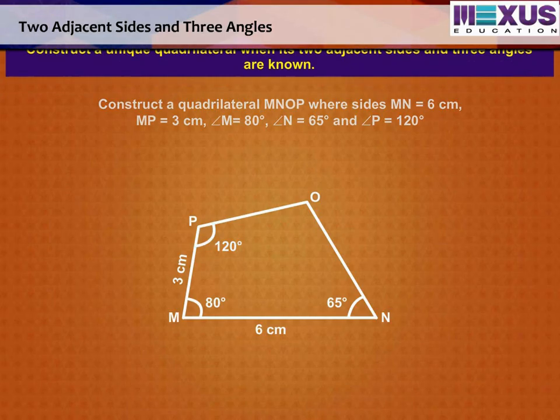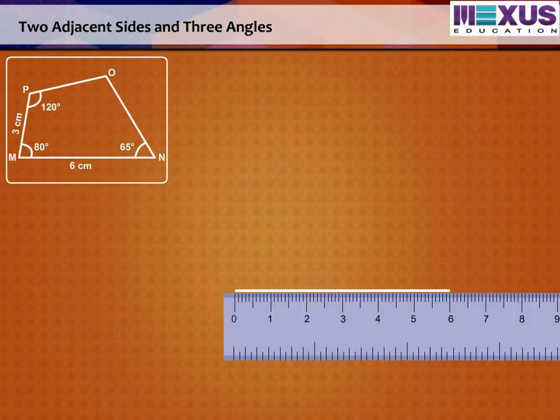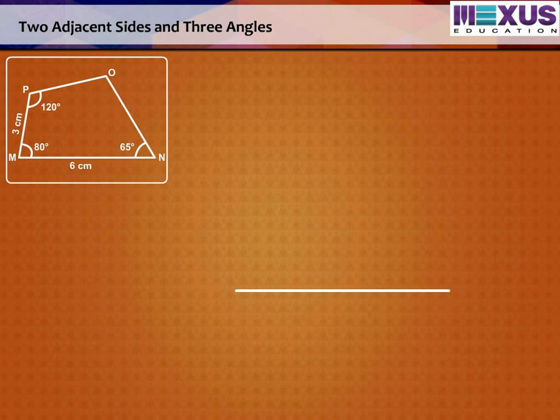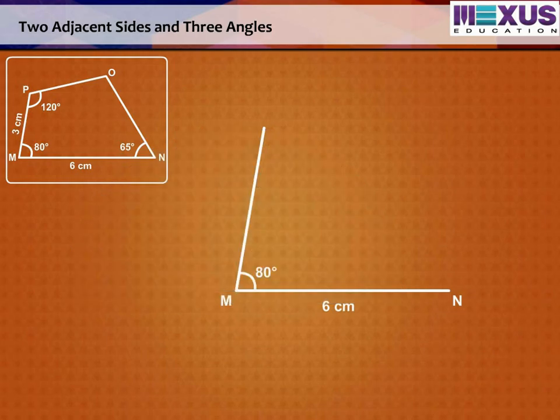Step 1. Draw a line segment MN equal to 6 cm using a ruler. Step 2. Now, draw angle M equal to 80 degrees with the help of the protractor. Step 3.